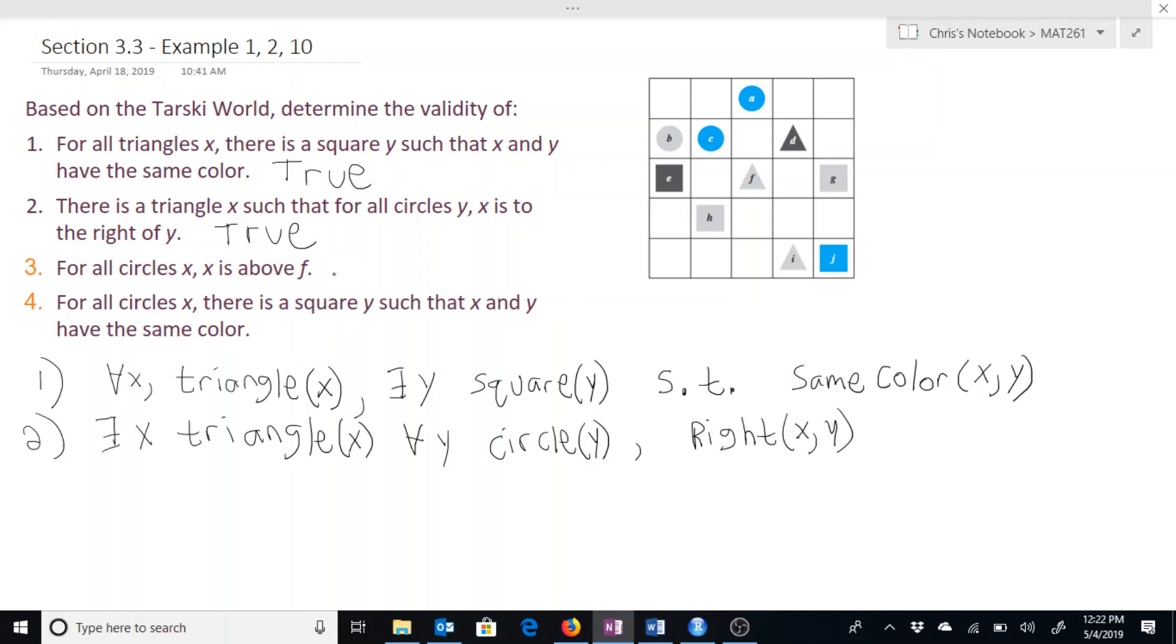Then, for all circles x, x is above f. Specifically, the letter f being right here. We could see all three of the circles are above that letter f. So this one's true.